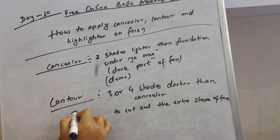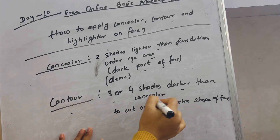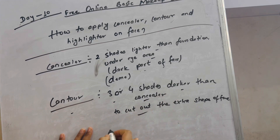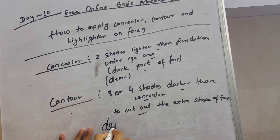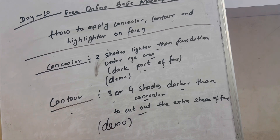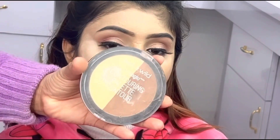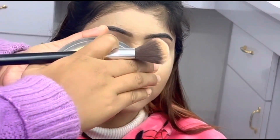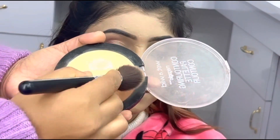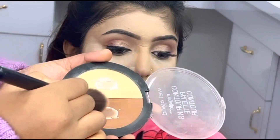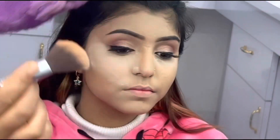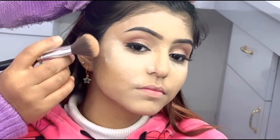I will use my face to control. I will use 3 or 4 shades of concealer on my face. I am going to control the extra face cut and make the oval shape.